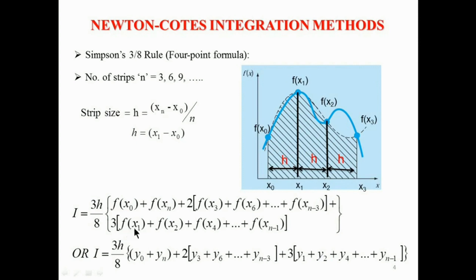The remaining terms are f(x1), f(x2) — since f(x3) is already used, it is not included here — plus f(x4) + f(x5) — since f(x6) is already used, it is excluded — then f(x7) and so on up to f(xn−1). Since f(xn) is already accounted for, it is not required again. Similar to the previous formulas, this formula can also be written in terms of y.